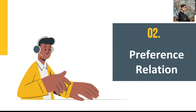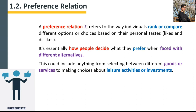In this part, let's talk about preference relation. First, let me define what preference relation is. Preference relation is a binary relation — we use a specific notation for that — and it refers to the way individuals rank or compare different options or choices based on their personal tastes, likes, and dislikes.